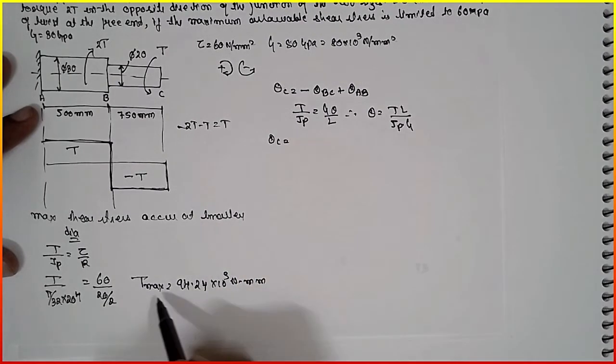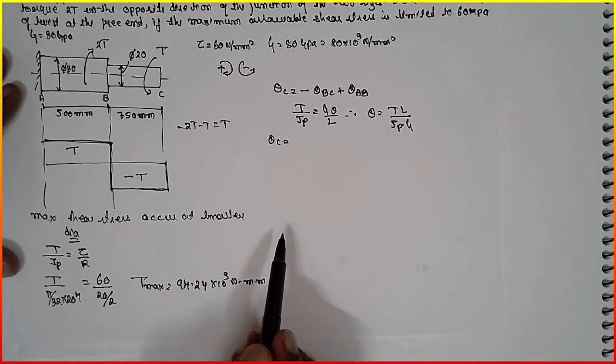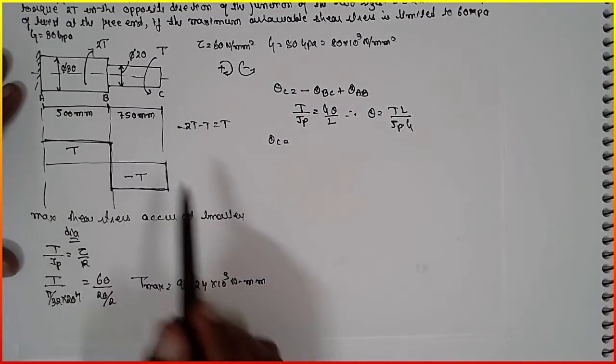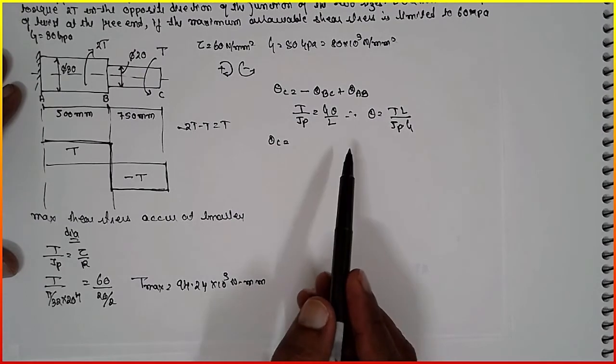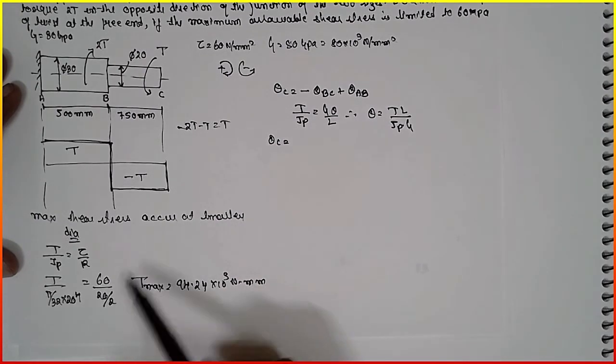Now the torque remains same, both the torque remains same here. If you are getting confusion, if you solve by segment wise, then also you have to take the T, both the T. Both the T has same value because the shear stress occurs in a smaller section.